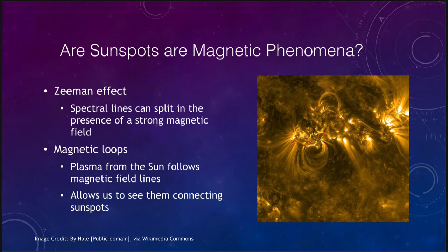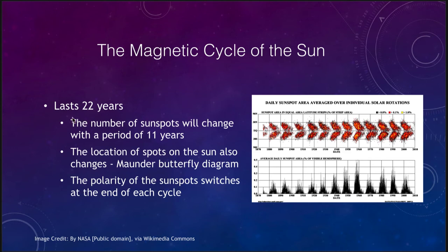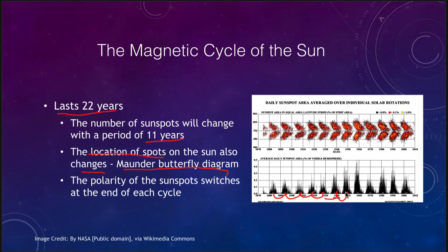Now let's look at the pattern of that magnetic cycle. The magnetic cycle is 22 years, although the number of sunspots changes with a period of 11 years. Not only does the number of sunspots come and go with this period, but the location of the spots on the sun also changes. This is seen in what we call the Maunder butterfly diagram. At the beginning of each cycle, sunspots form at more northerly latitudes, and at the end of the cycle they form closer to the equator.